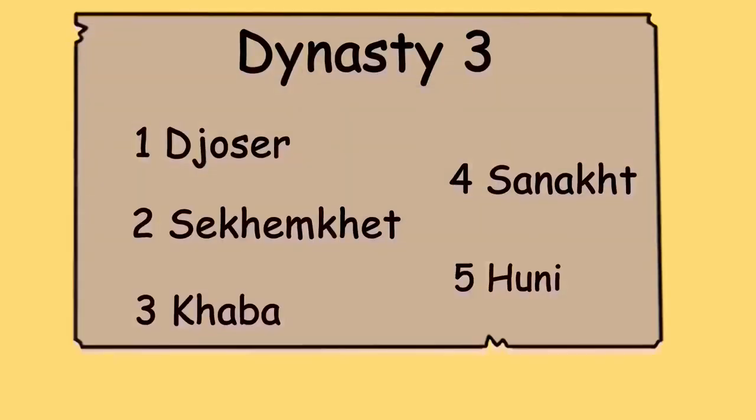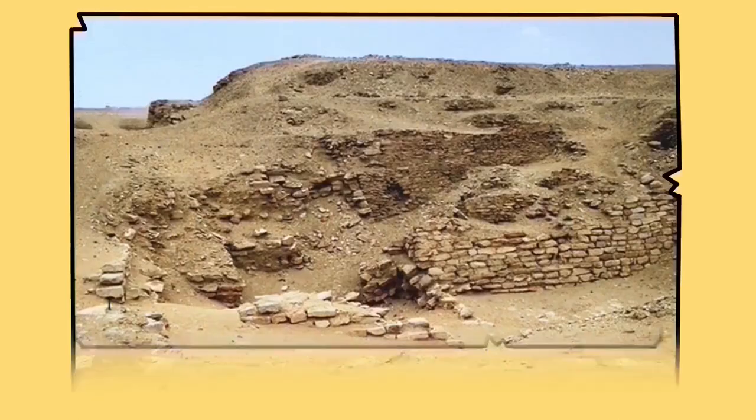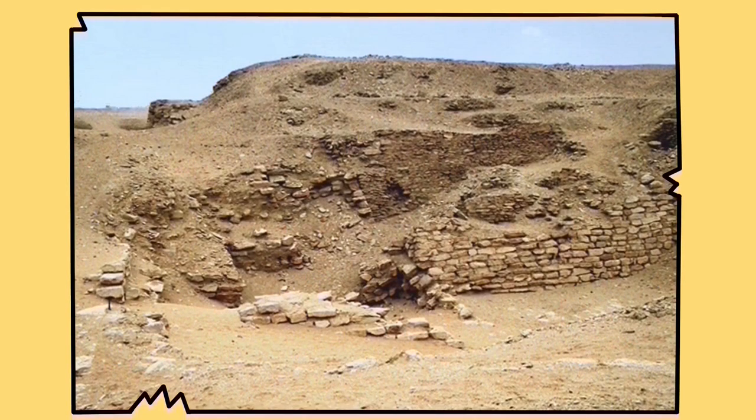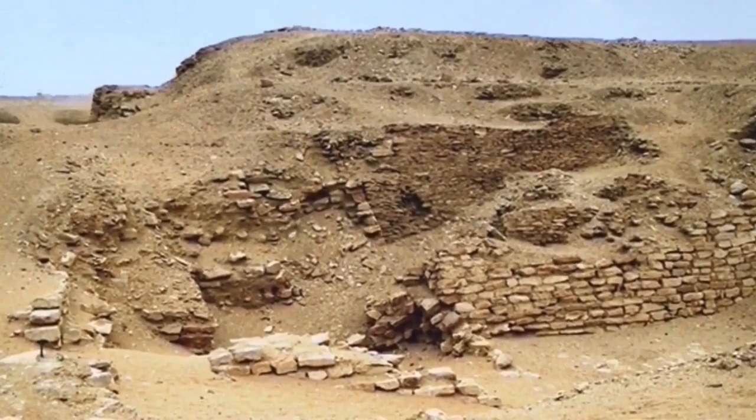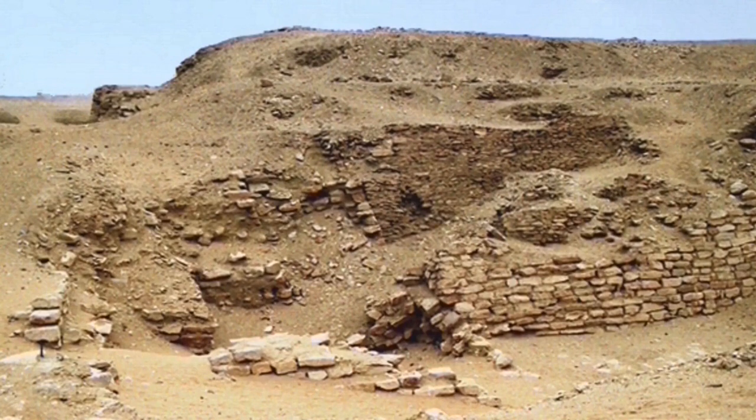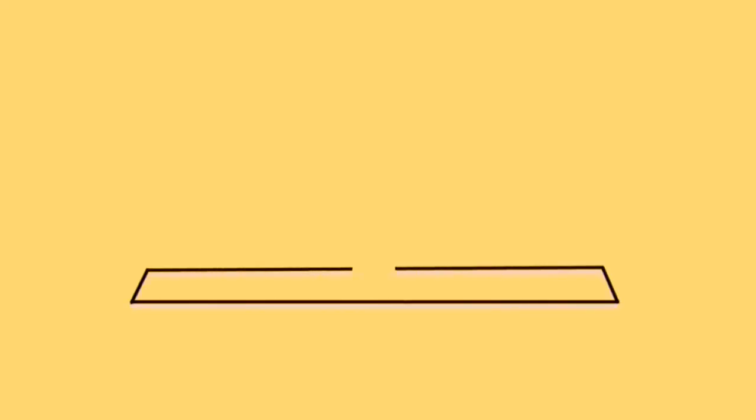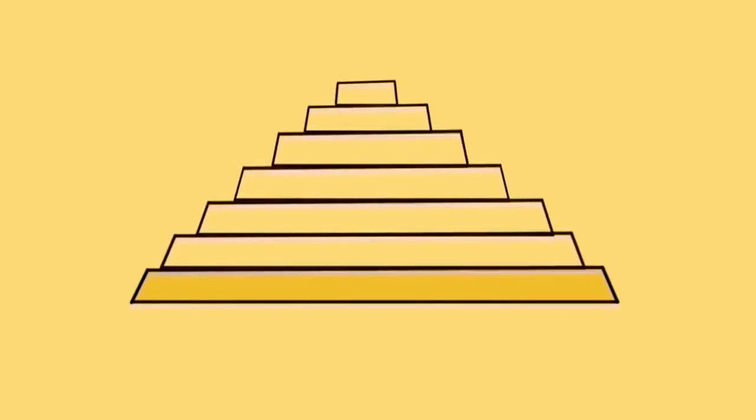That's exactly what happened to the next two pharaohs of the third dynasty, Sekhemkhet and Khaba. Sekhemkhet's pyramid project is known to us today as the Buried Pyramid. As its name suggests, it was completely buried when first discovered in Saqqara. In fact, due to his short reign of about six years, the construction only got as far as the base before the project was abandoned. By calculating the size of that base, Egyptologists tell us that this was likely to be a seven-step pyramid that would have surpassed Djoser's if it had been completed. But it was not meant to be, and the project remained unfinished.